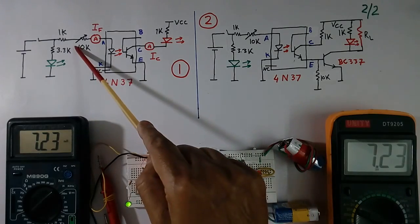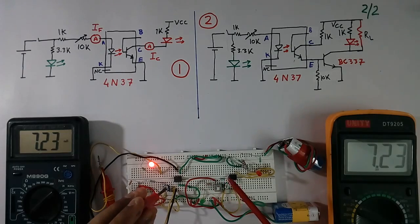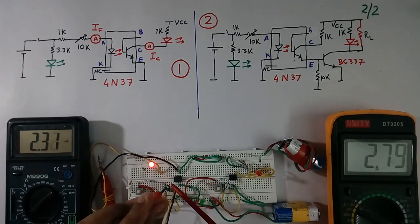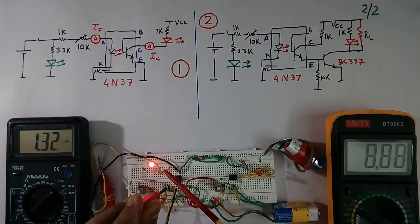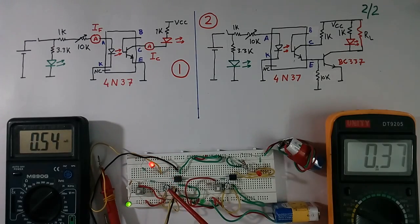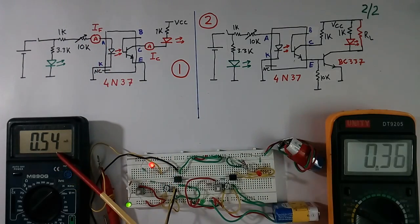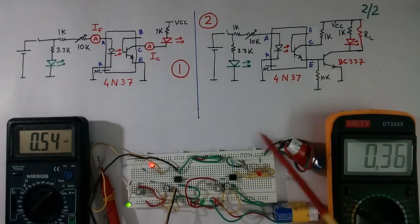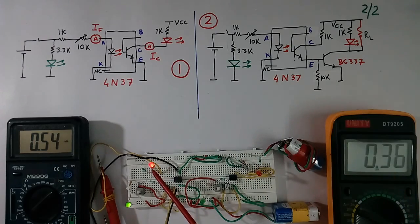Now I will change the value of this resistance. I will increase the value. Now you see as I am increasing, light is reducing. See here light was more, here light is less. I have increased the resistance. As soon as I increase the resistance, this current has come down to 0.54 mA. This current is 0.36 mA. Because less current, so less power.